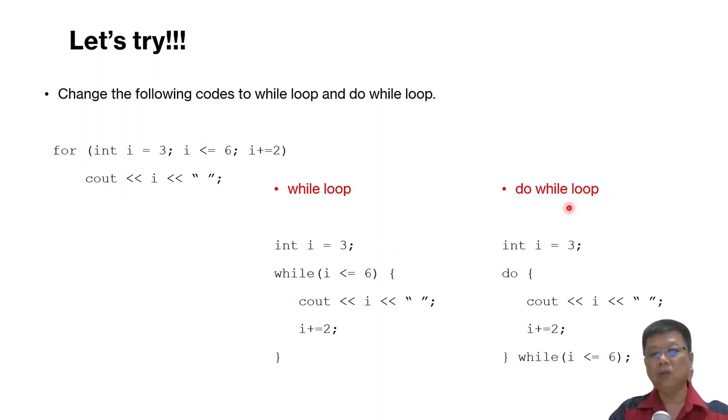Next is the do while loop. We maintain the initializations part. This while and the conditions, move it to the bottom, and then put a semicolon. This part, replace with do. So basically, you will get the same answer when you run a for loop, while loop, and do while loop in this case.